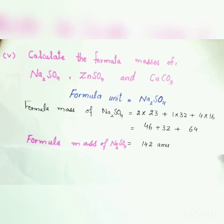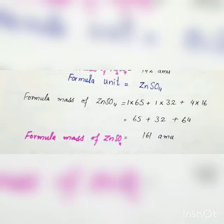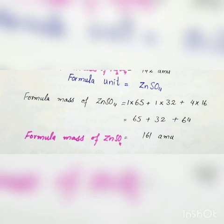Next is zinc sulfate, with formula unit ZnSO4. Zinc has 1 atom with atomic mass 65, sulfur has 1 atom with atomic mass 32, and oxygen has 4 atoms with atomic mass 16. Putting in all these values and solving gives us 161 atomic mass units. So the formula mass of zinc sulfate ZnSO4 is 161 atomic mass units.